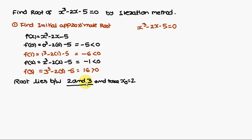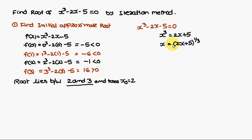The root lies between 2 and 3, so we take x0 = 2. Next, we design the new function phi(x). From x³ - 2x - 5 = 0, we get x³ = 2x + 5, so x = (2x + 5)^(1/3). We define phi(x) = (2x + 5)^(1/3).